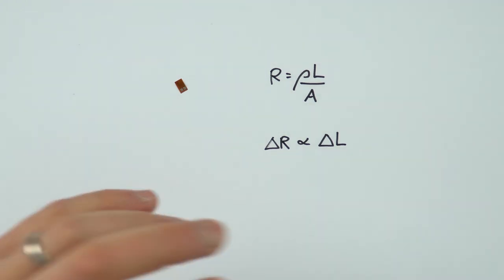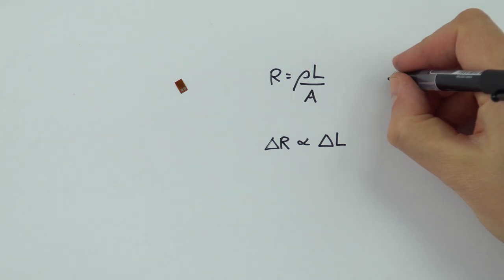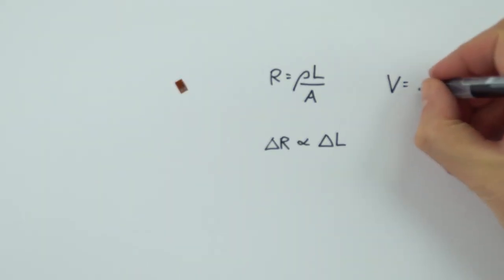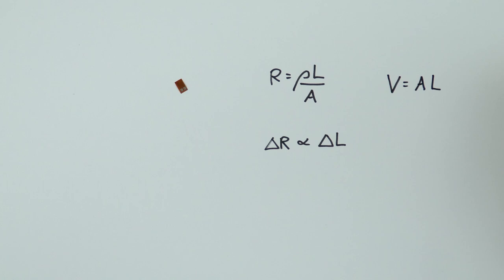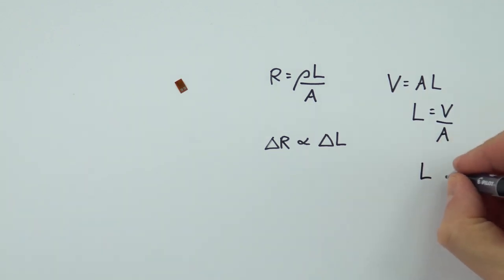The other thing, which might be a more demanding question, is if we think about the volume of metal in that wire. That's equal to the area times the length, and that means the length of the wire is equal to the volume divided by the area. If the volume is constant because there's the same amount of material there, we could also say that the length is proportional to one over the area.